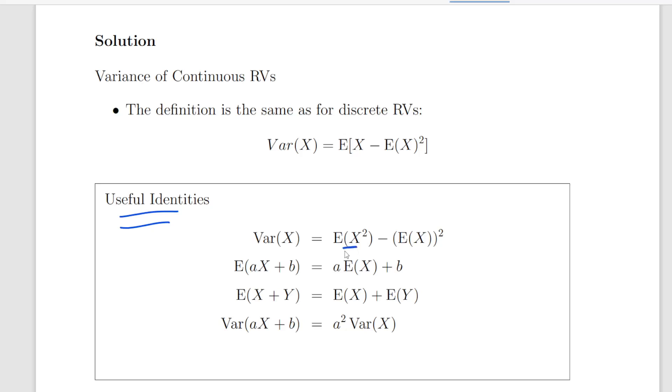The expected value of aX plus b, where this is a linear transformation of X, is a times E(X) plus b. If we have two expressions, the expected value of X plus Y is essentially the sum of the expected values of the individual components.